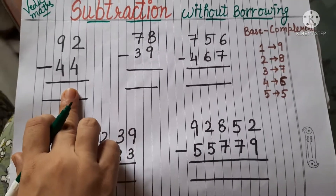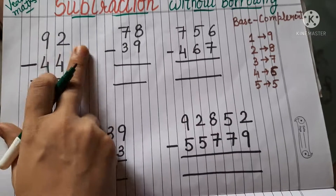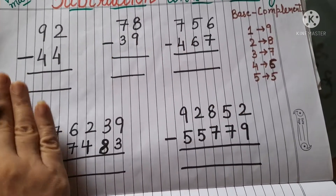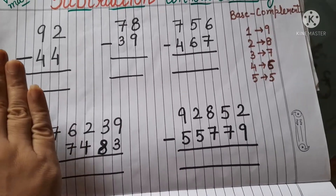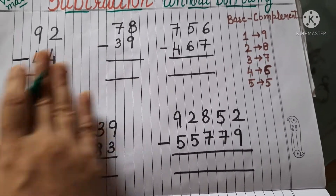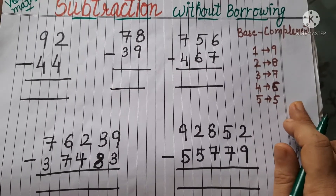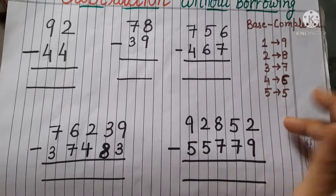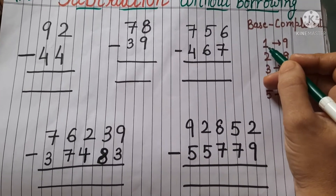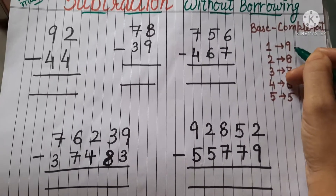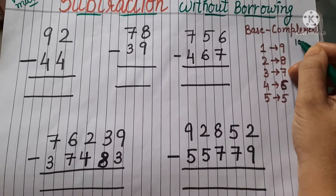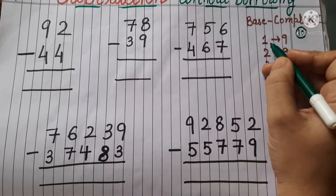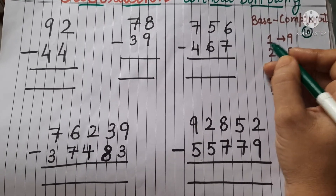Let's start. See the first question — we have 92 minus 44. We will not do from right to left; we will start from the left side. First you have to understand the concept: the base complement concept. Suppose 1 is here — the complement of 1 will be 9, because 1 plus 9 equals 10. So 1 complement is 9 and 9 complement is 1.